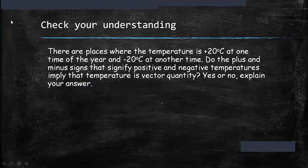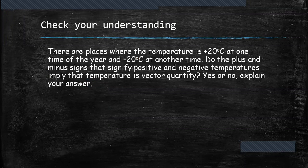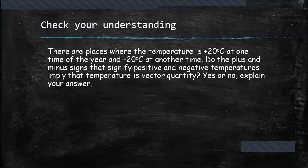Now, let's check your understanding. There are places where the temperature is positive 20 degrees Celsius at one time of the year and negative 20 degrees Celsius at another time. Do the plus and minus signs that signify positive and negative temperature imply that temperature is a vector quantity? Yes or no? Explore your answer in the comment section of this video.